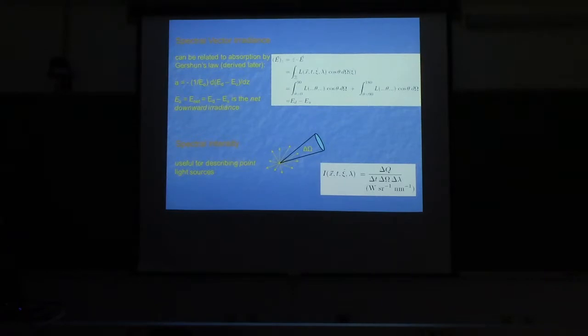This is usually called the net irradiance. Why that's important is we'll see Gershon's law, which relates the absorption coefficient to the scalar irradiance and the depth derivative of ED minus EU.